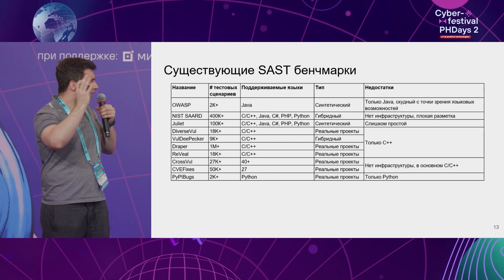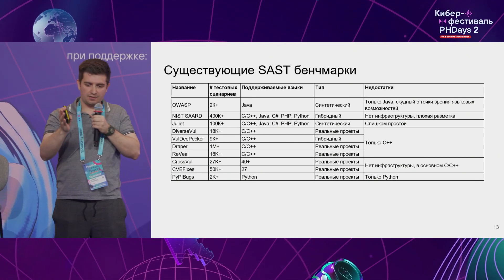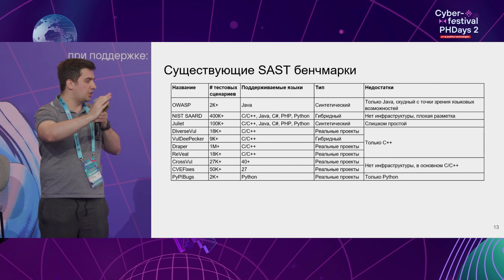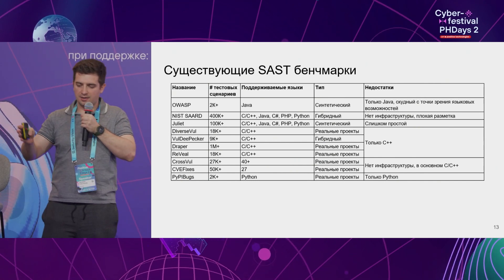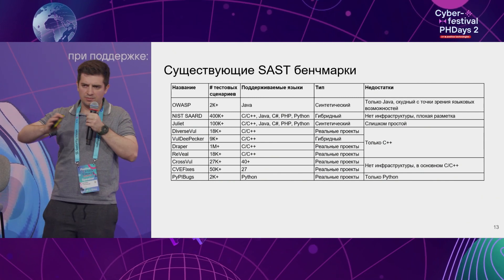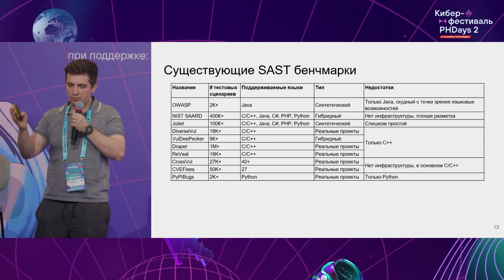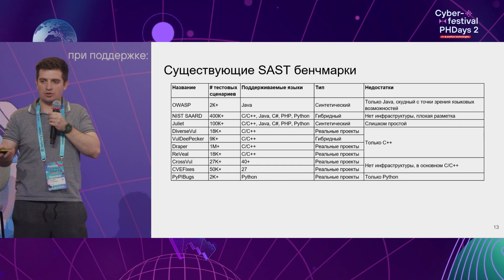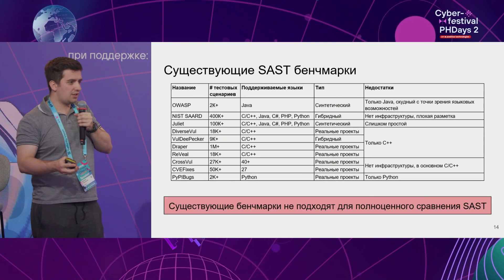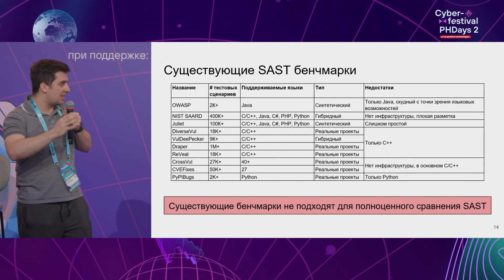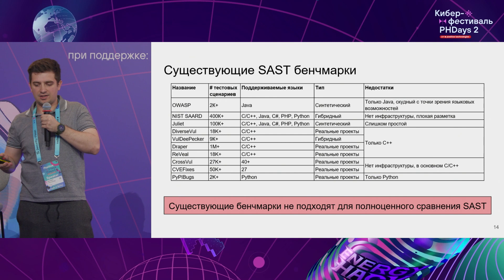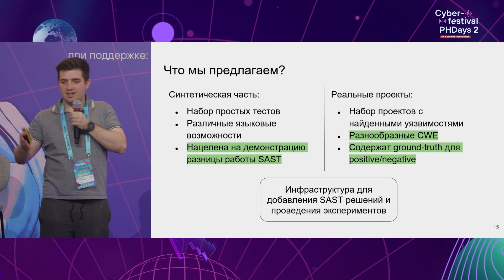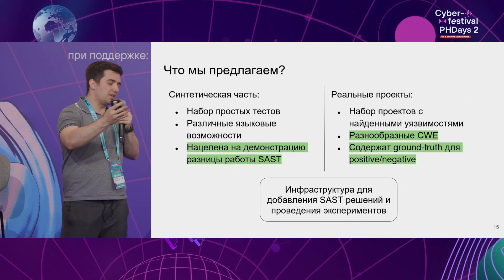There is a certain number of benchmarks today. However, the vast majority of them are language-specific, normally designed for C or C++, because these are among the most popular languages in such research. Sometimes there is no infrastructure in place. Or like Juliet — it is a benchmark that works with all tools, but it's way too simple. Based on this review, we can conclude that existing benchmarks do not cut it for a full-fledged SAST comparison. It takes a new solution, and we are introducing such a solution today.